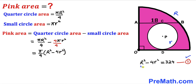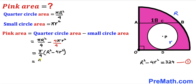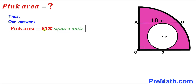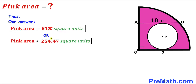From Equation 1, R² − 4r² = 324, so substituting: pink area = (π/4) × 324. Since 324 / 4 = 81, the pink shaded area is 81π square units, approximately 254.47 square units.